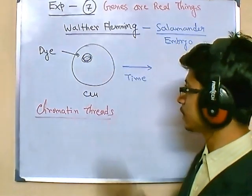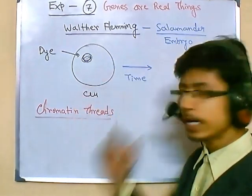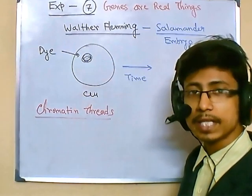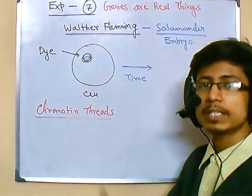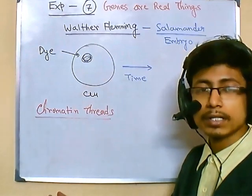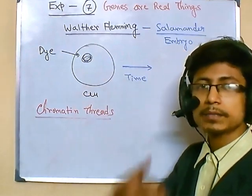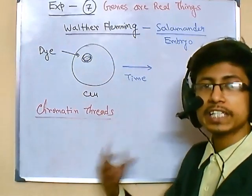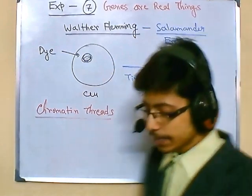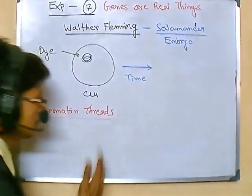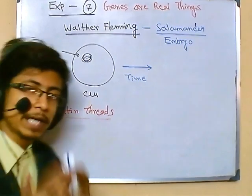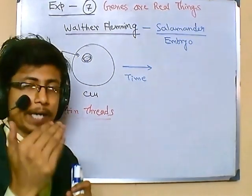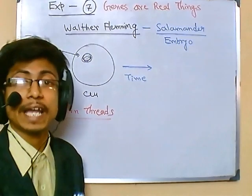He took the cell, applied some dye, waited for some time, and started to see the changes in the cell. He found that the cell was actually increasing in number — from one cell it produced two cells, from two it produced four and so on, exponentially increasing the number of cells. Walter Fleming looked at the events sequentially and prescribed a format — he described the sequentiality of that event.